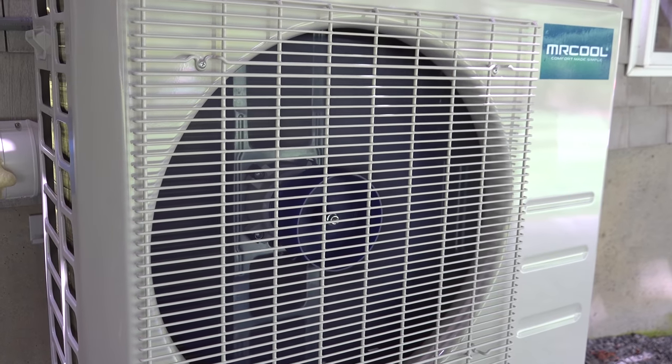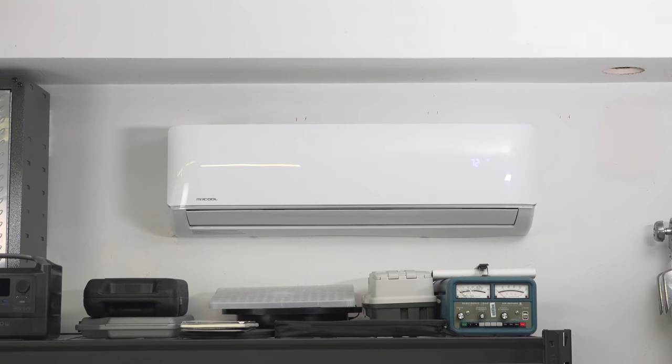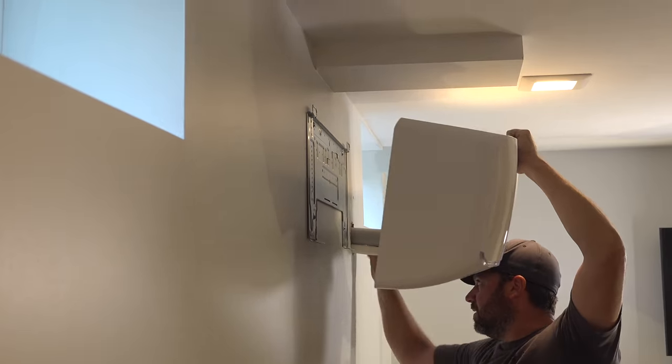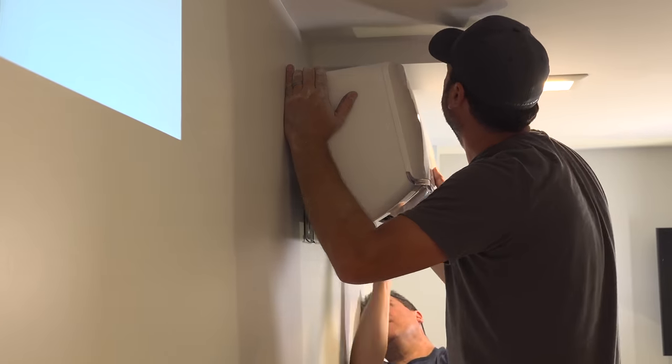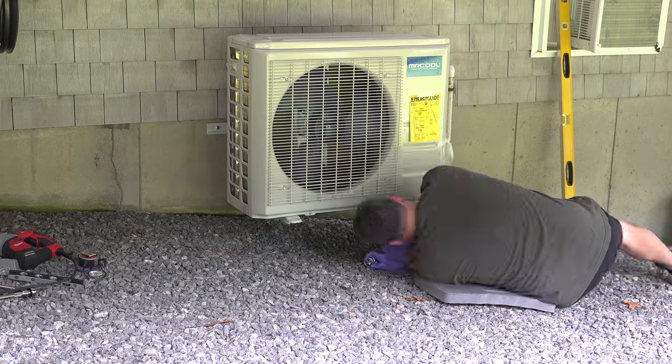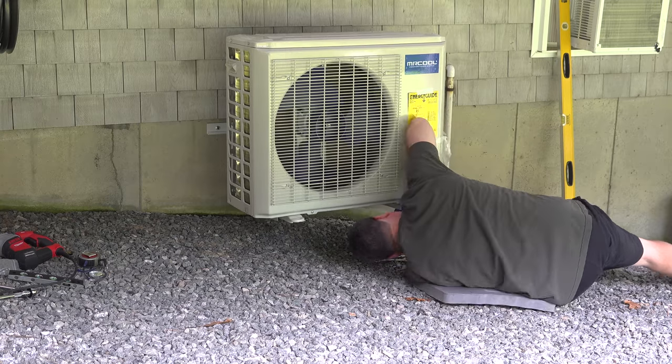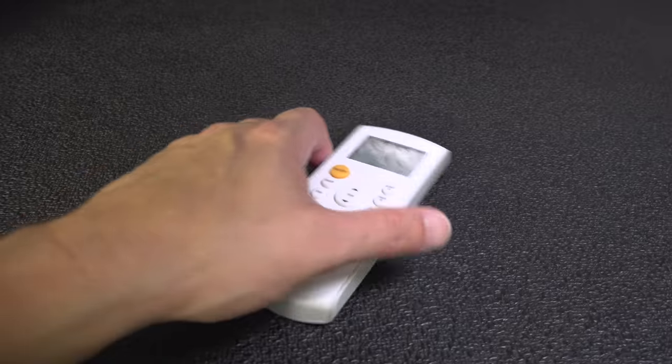The unit I'll be putting in is a Mr. Cool split ductless system that's 18,000 BTUs. I made a video earlier this summer where I put one of these in at my friend's house in his basement, but the difference was it was the two of us doing the job. This time I'm doing the entire thing alone including the electrical.